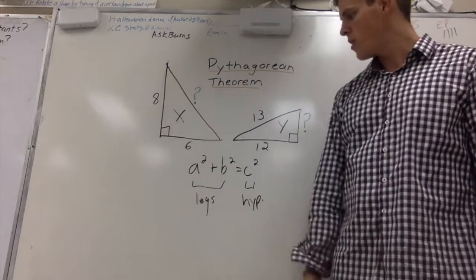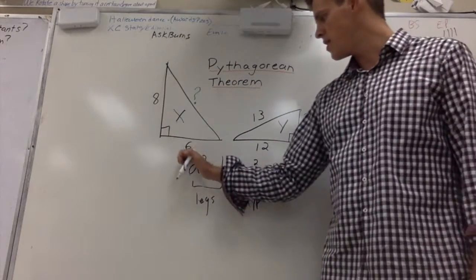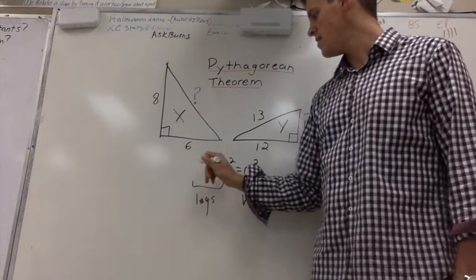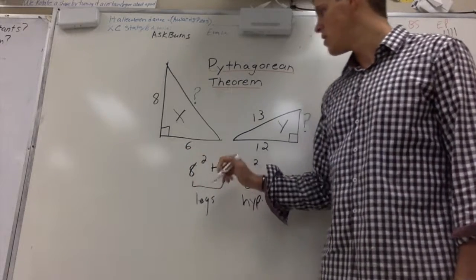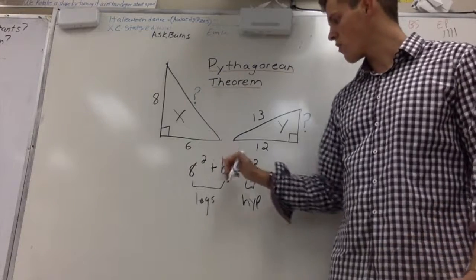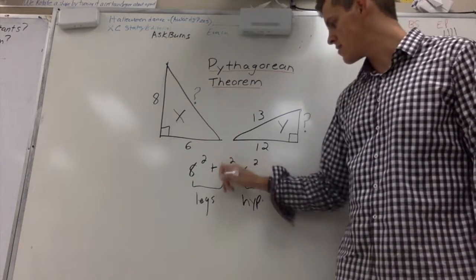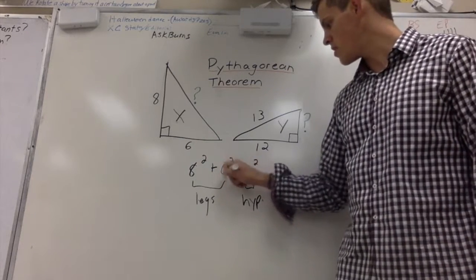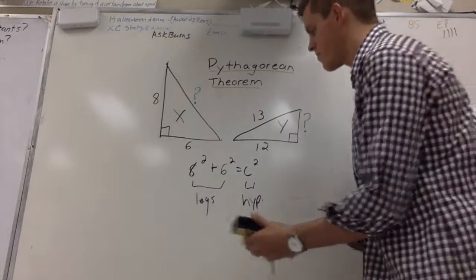We know that when we set this one up, we want to have our A squared be 8. And it does not matter which one's A and B. Right here, we're going to have 6, and we're going to solve for C.